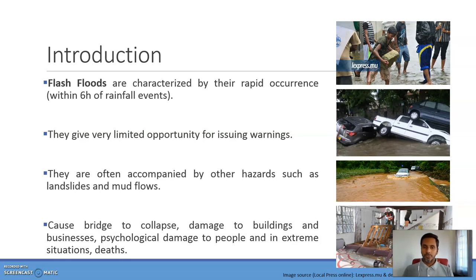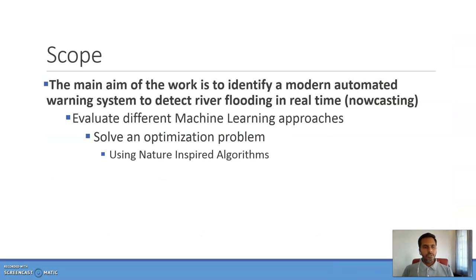Flash floods are often accompanied by different hazards such as landslides and mud flows, and they cause damage to buildings, physical damage to infrastructure, to the economy of the country, and also to the life of people. This paper is part of a larger piece of work about identifying a modern automated warning system for detecting river flooding on the island of Mauritius.